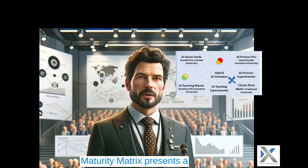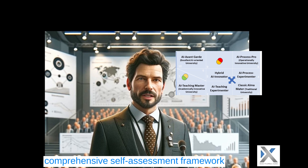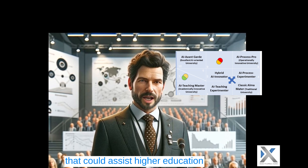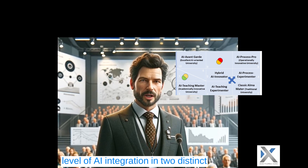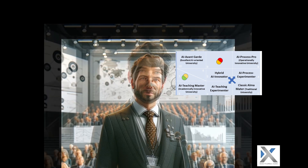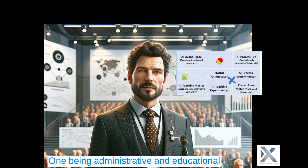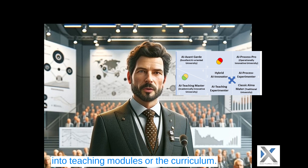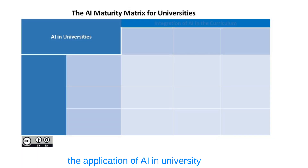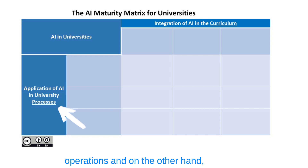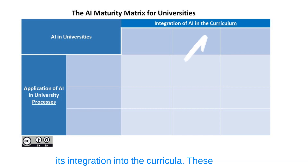The AI Maturity Matrix presents a comprehensive self-assessment framework that could assist higher education institutions in identifying their current level of AI integration in two distinct areas: one being administrative and educational processes, and the other the integration into teaching modules or the curriculum. The structure of the framework is defined along two principal axes: the application of AI in university operations, and its integration into the curricula.